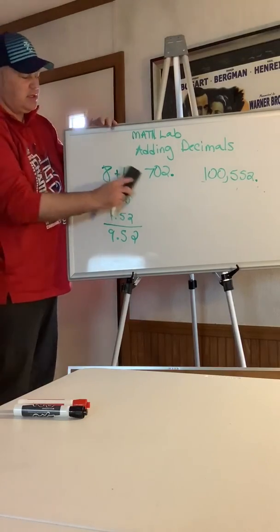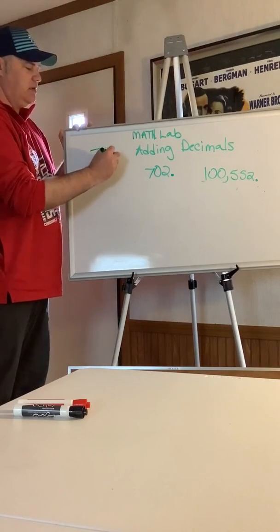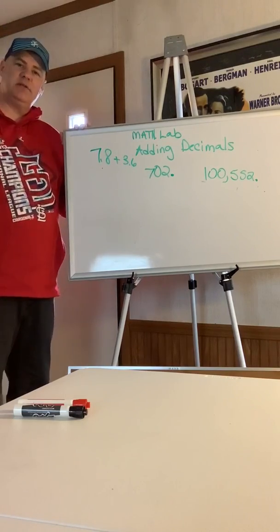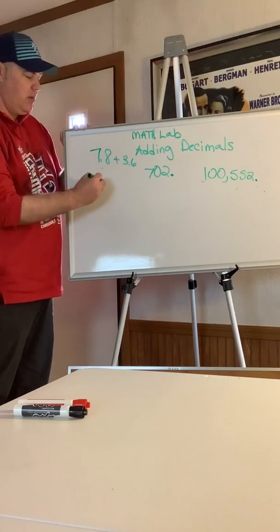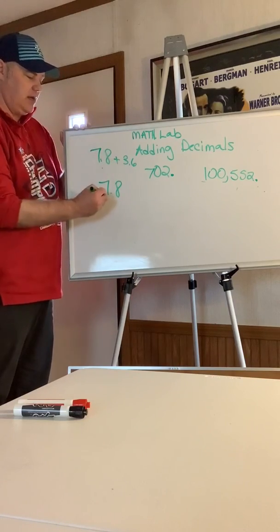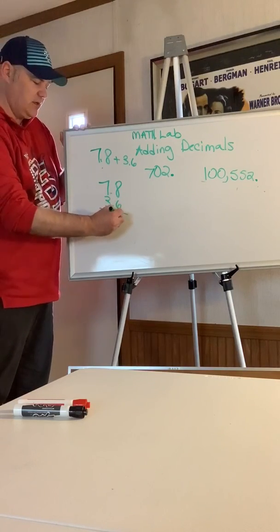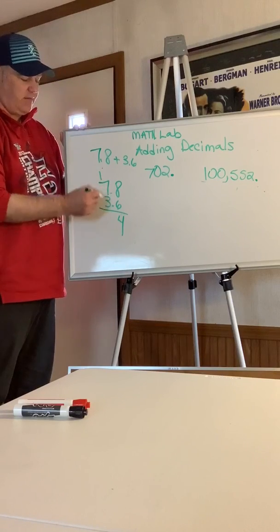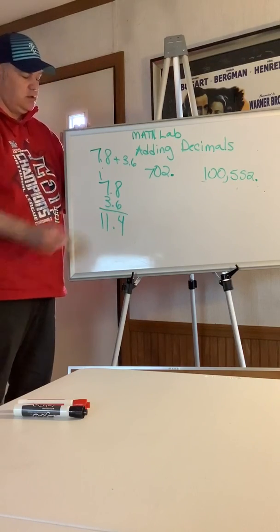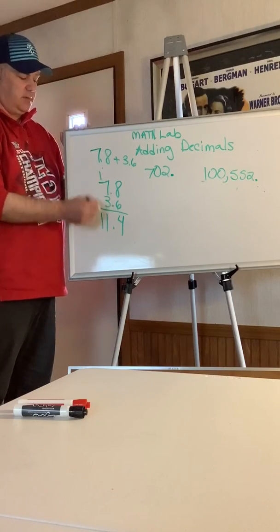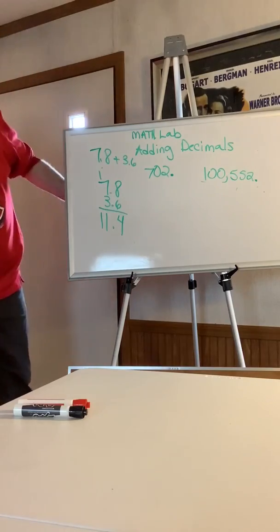It's easier when both numbers already have decimals. For example, 7.8 plus 3.6 — both already have decimals, so you just line them up. 6 plus 8 is 14, carry the 1. 7 plus 3 is 10, plus 1 is 11. Decimal comes straight down, giving you 11.4.